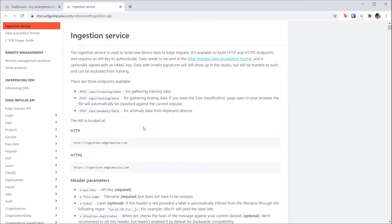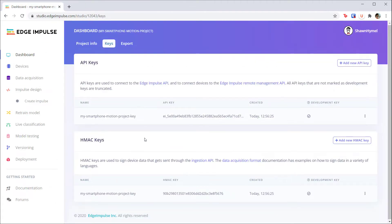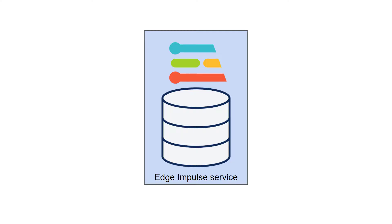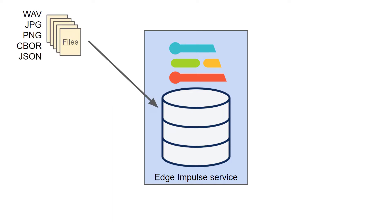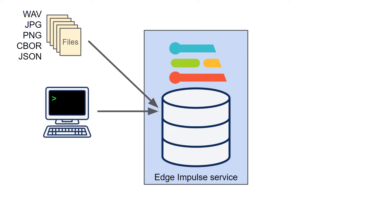It's great for scripting or automating the data collection and training process. We won't get into this in this course, but know that it is available so you don't have to do data collection by hand. There are a few ways to send data to the Edge Impulse service. The most straightforward method is to upload files directly. Edge Impulse accepts audio files, image files, and raw data stored in CBOR or JSON format. There is a command line tool that will let you create a script to automatically upload these files as well.